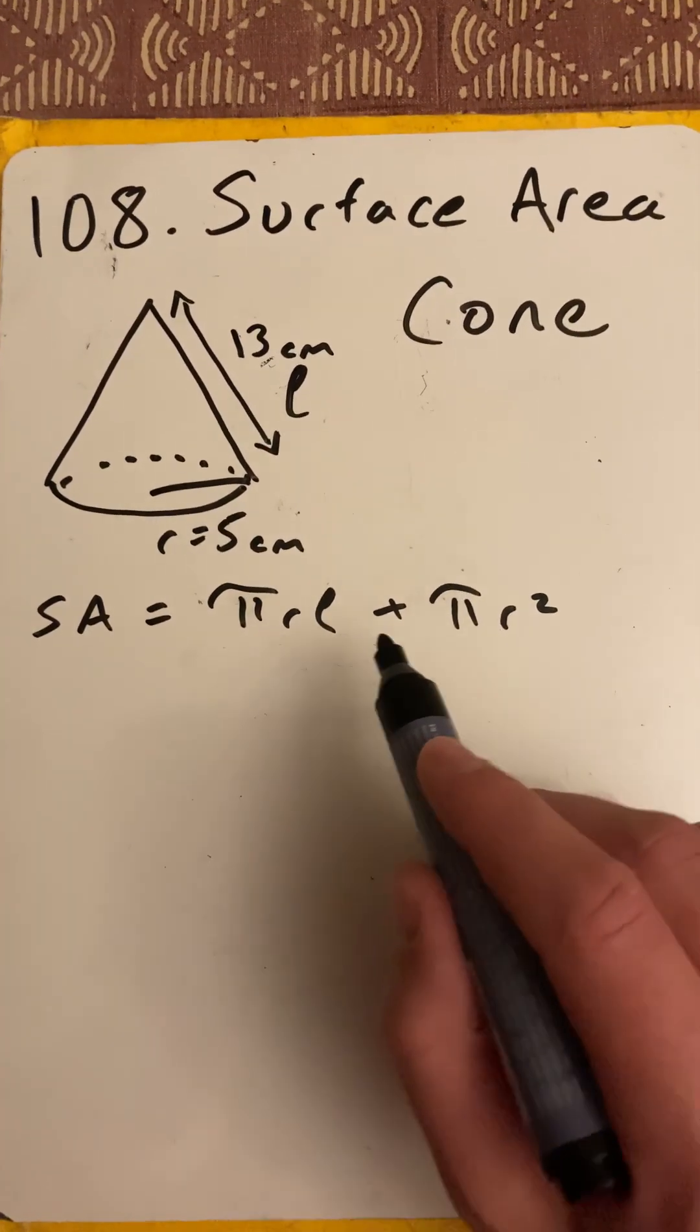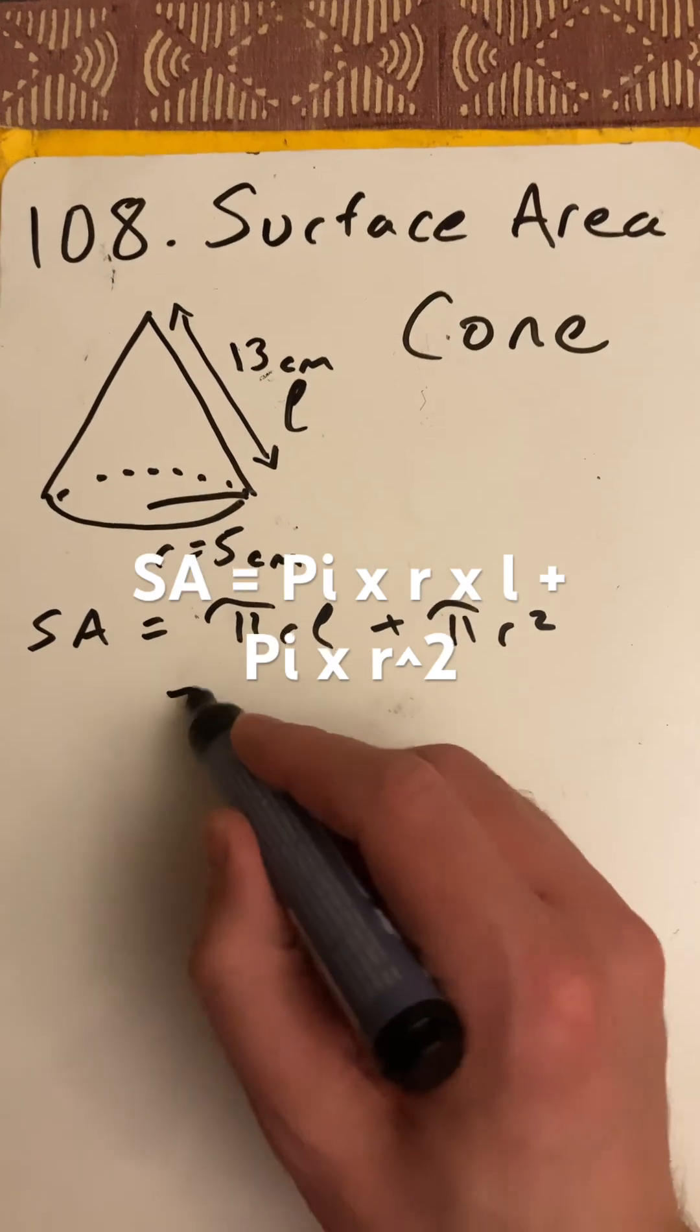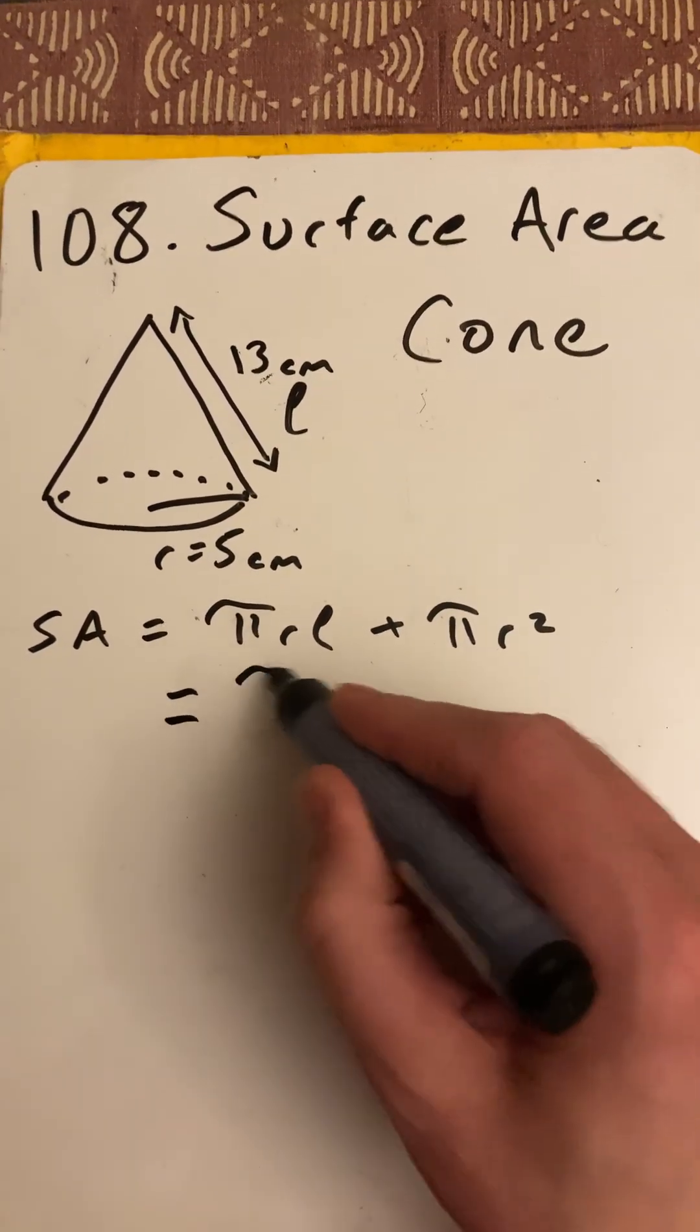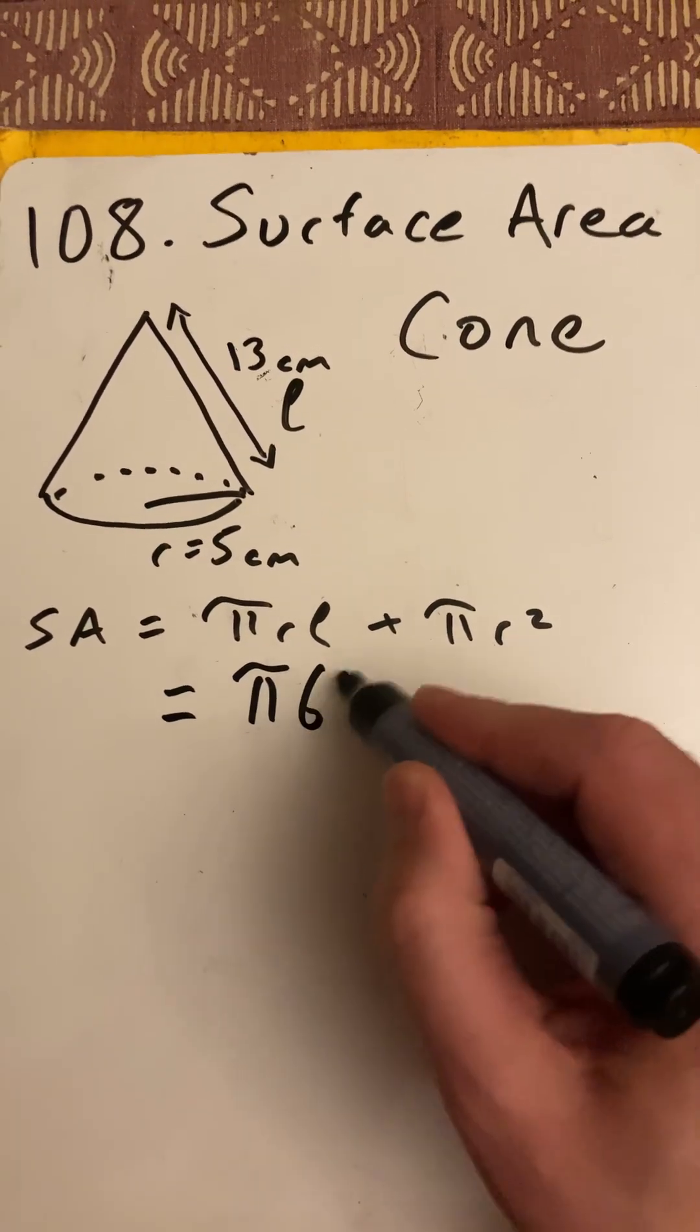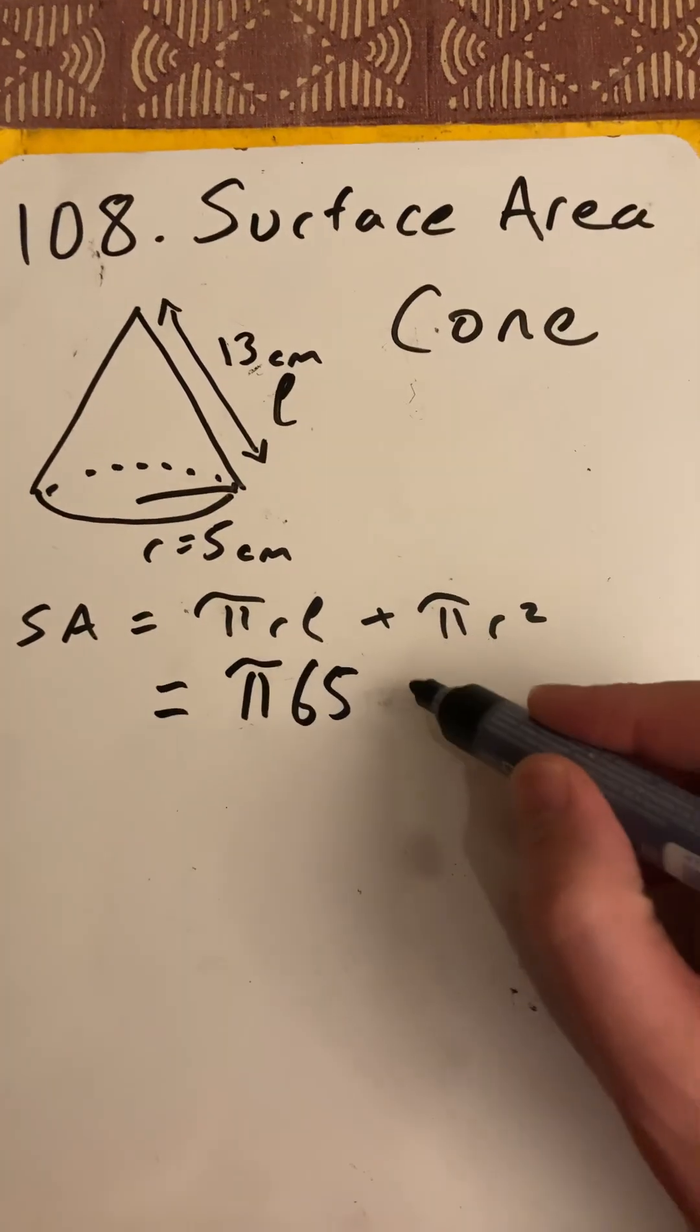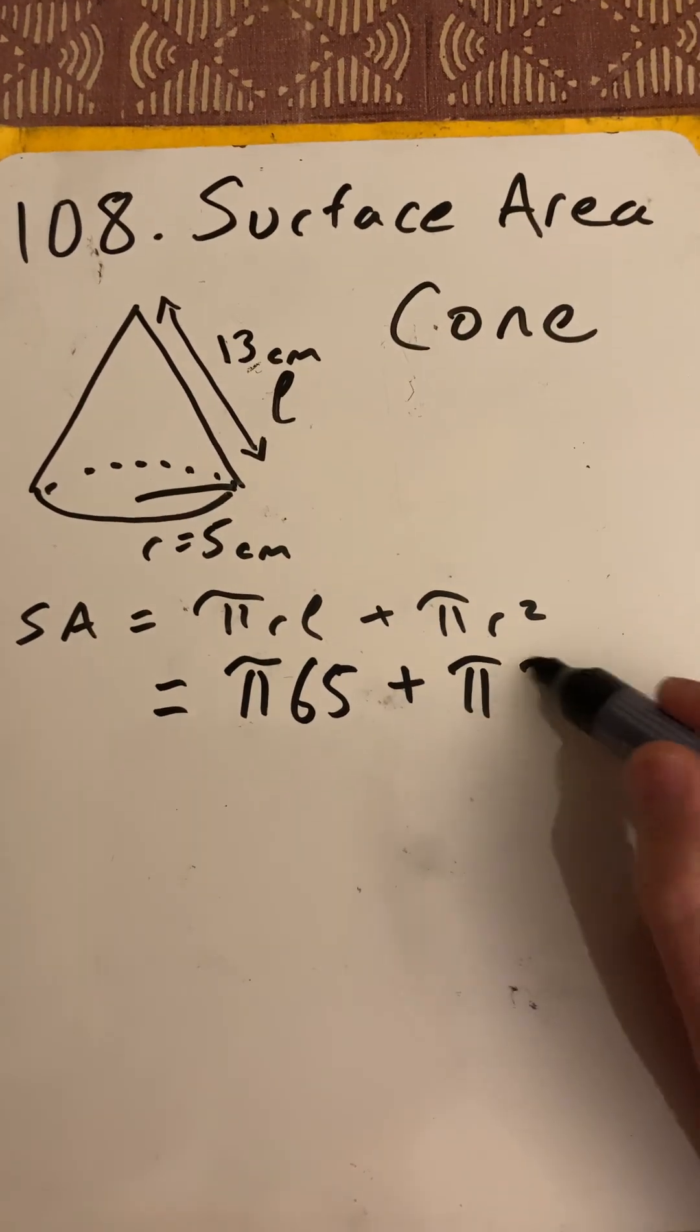The formula is pi RL plus pi R squared. So R times L will be 65, because that's 5 times 13, plus pi times 25.